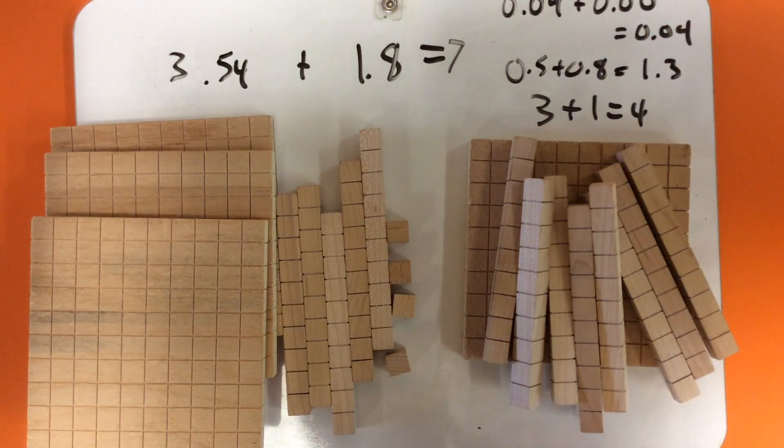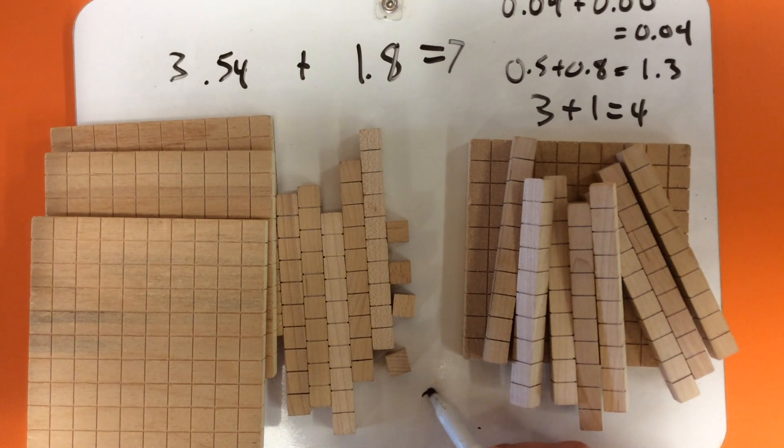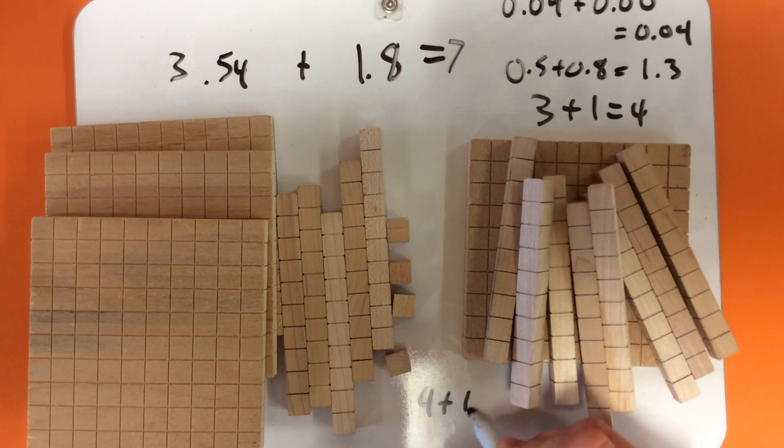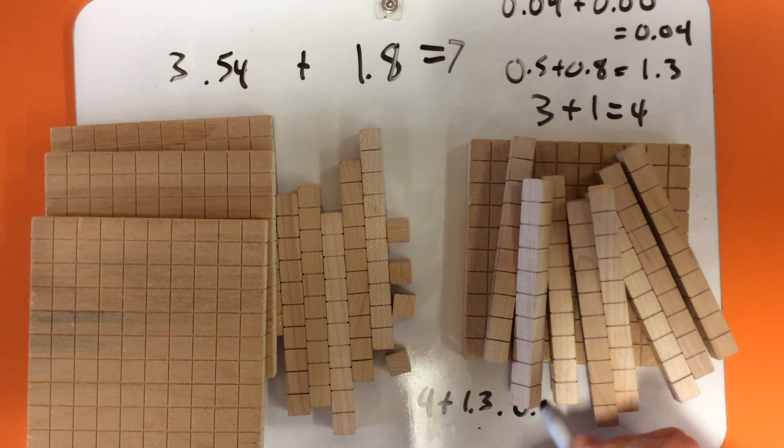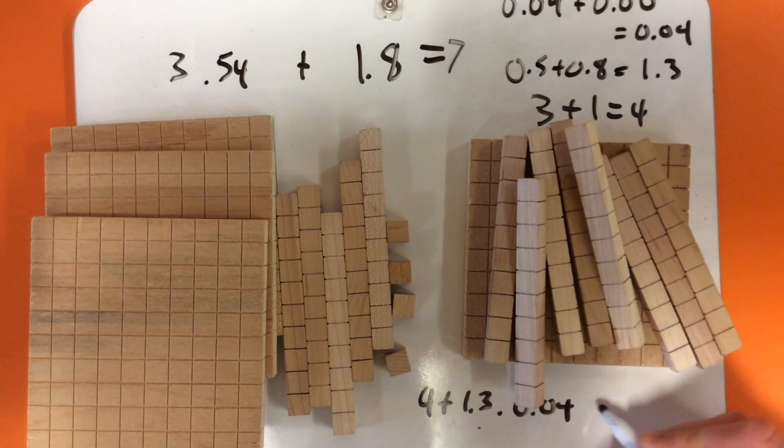Adding all of that up, 4 plus 1.3 plus 0.04, and that is 5.34.